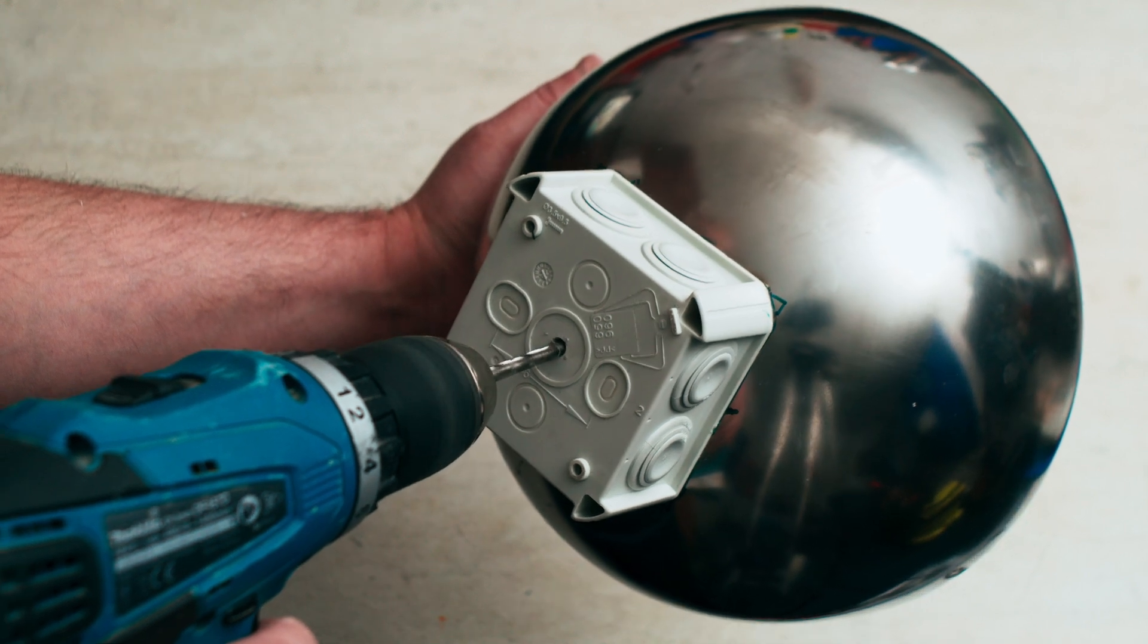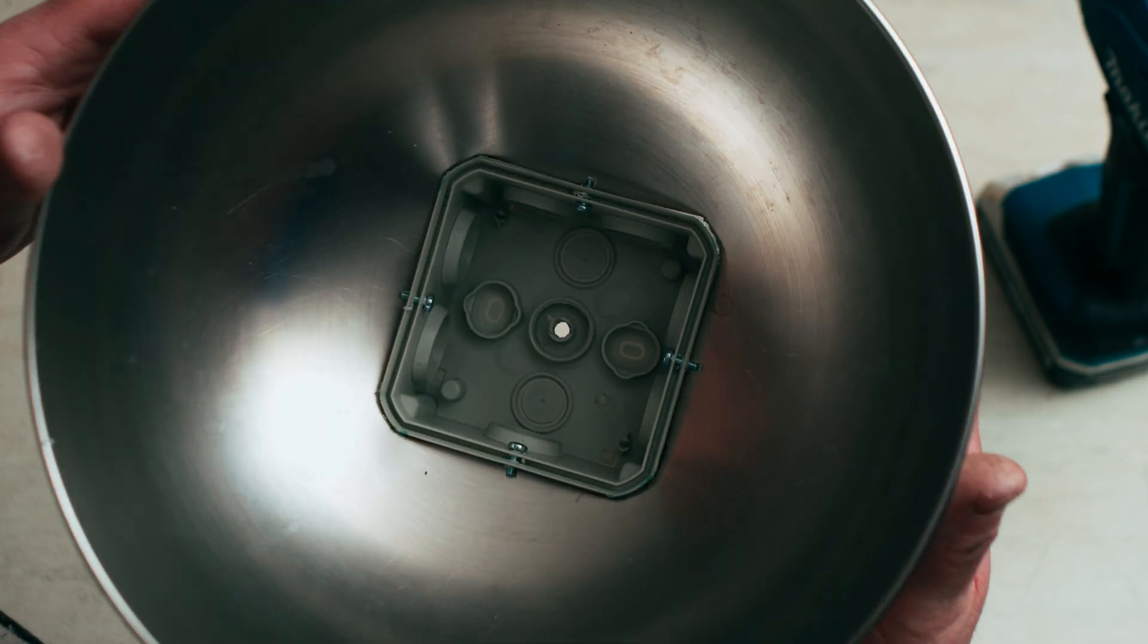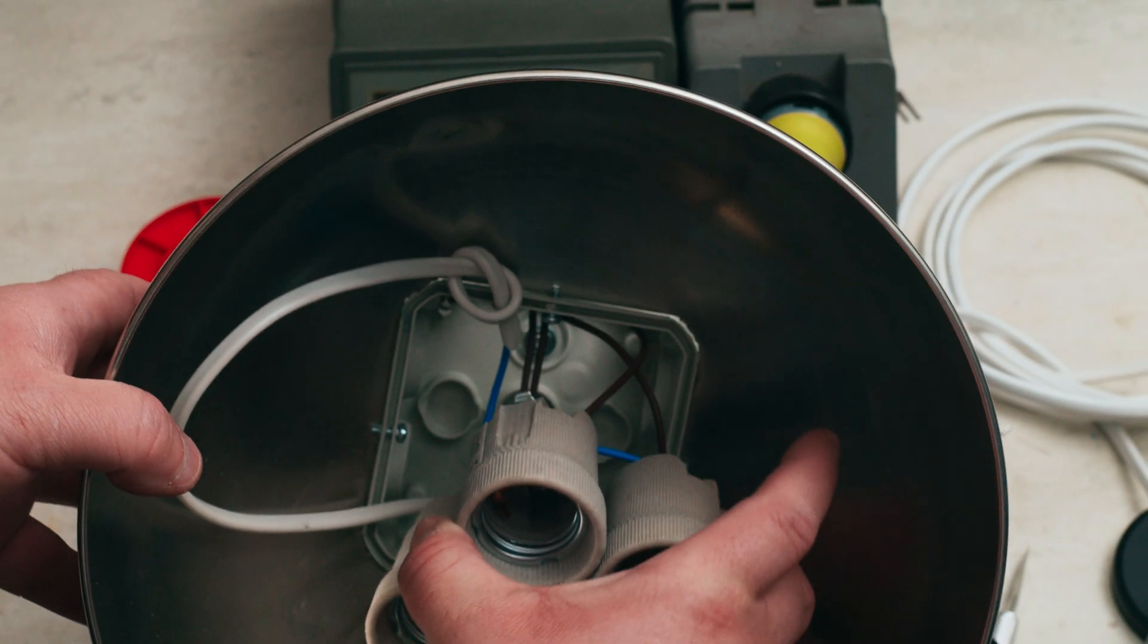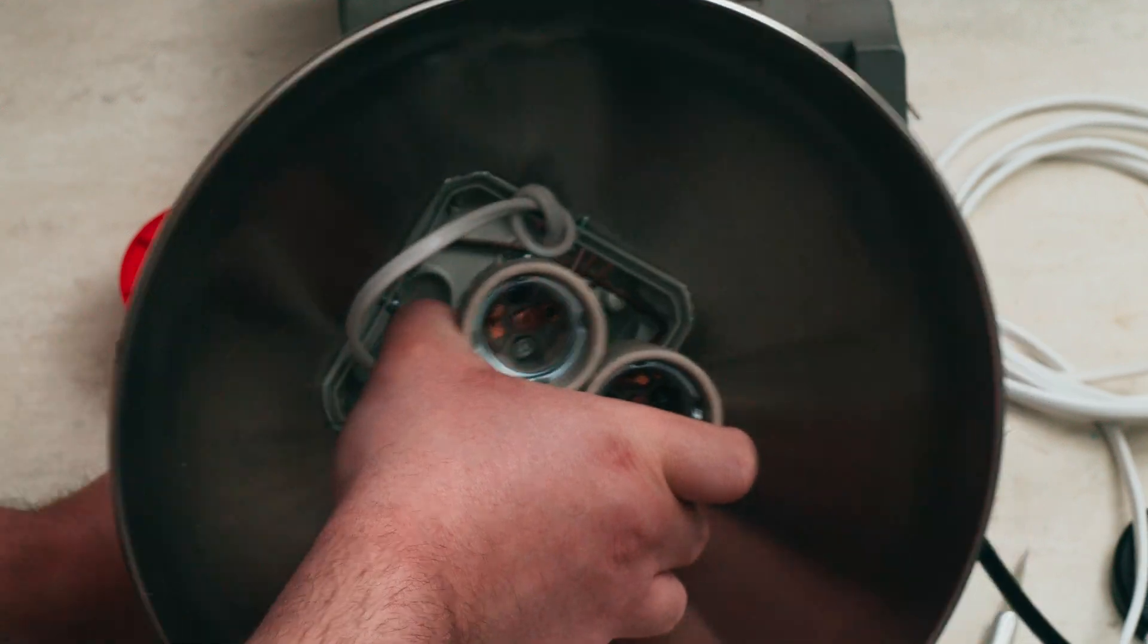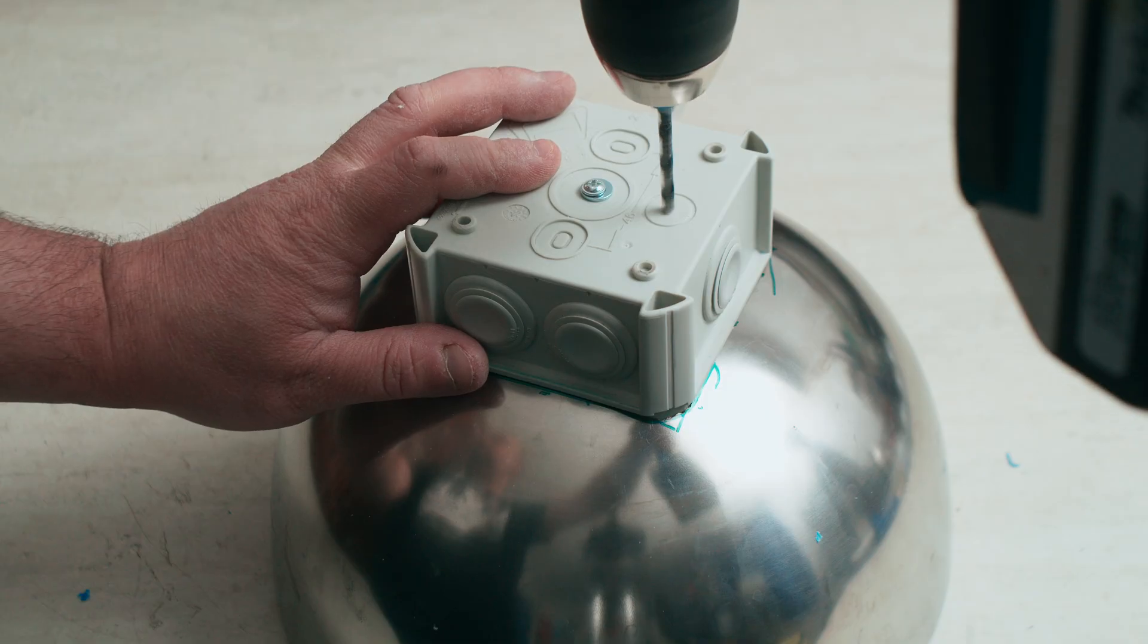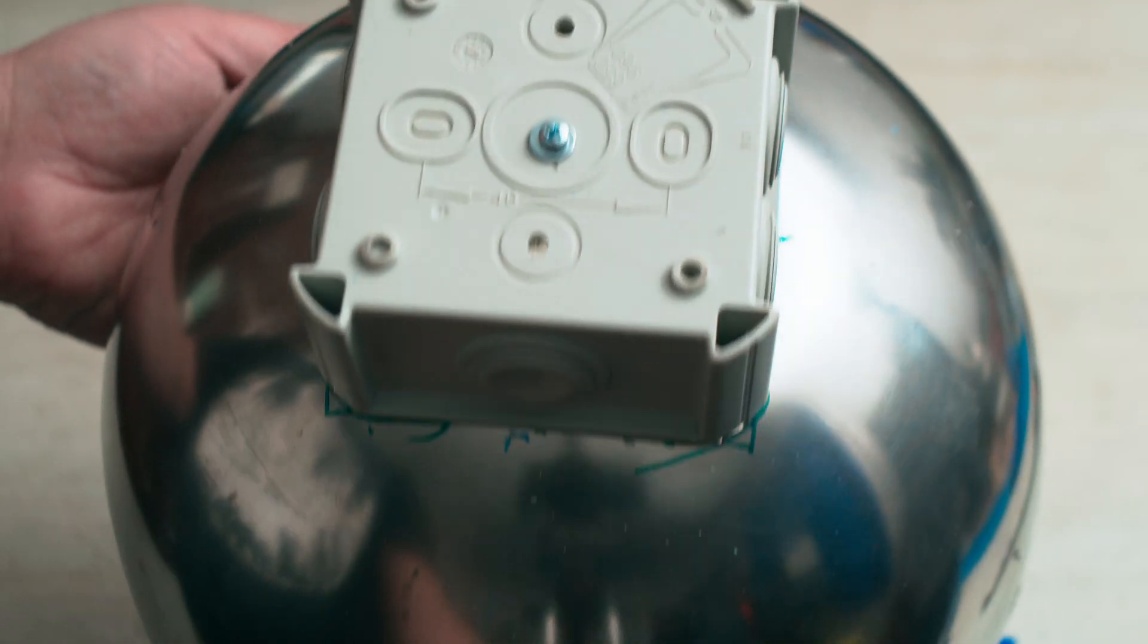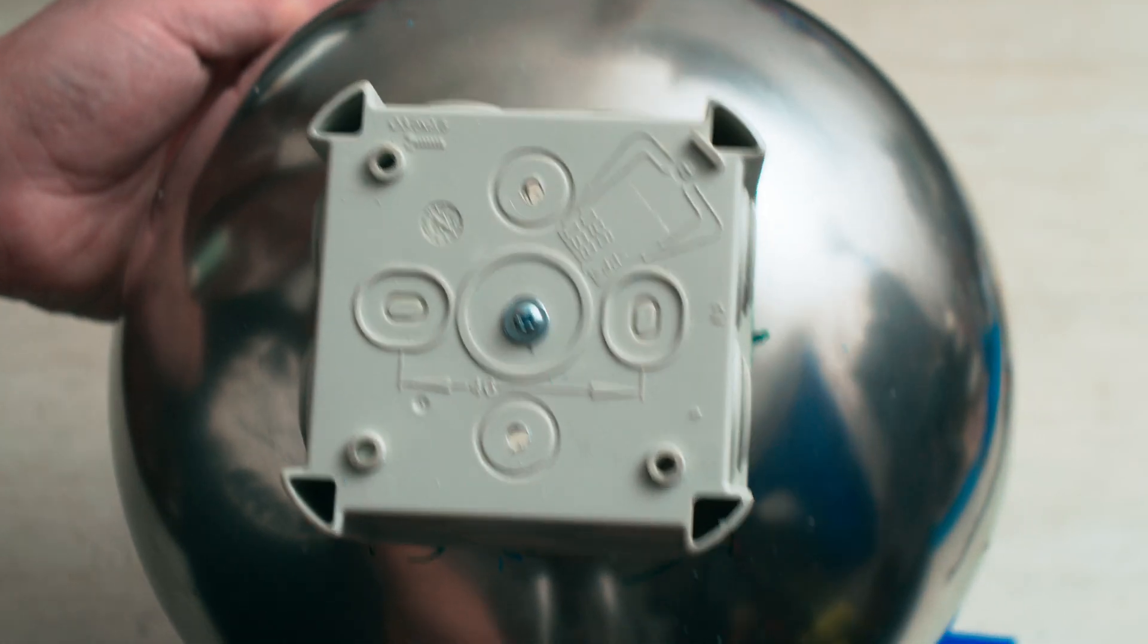Next, drill a 6 mm hole in the middle of the junction box. Install an M3 screw with a large head or with a washer to later secure the bulb sockets assembly to the junction box. Drill two 4 mm holes for the adjustable arm mount.